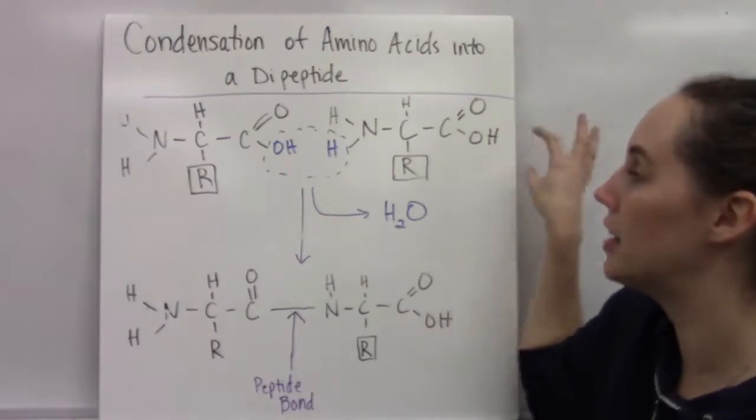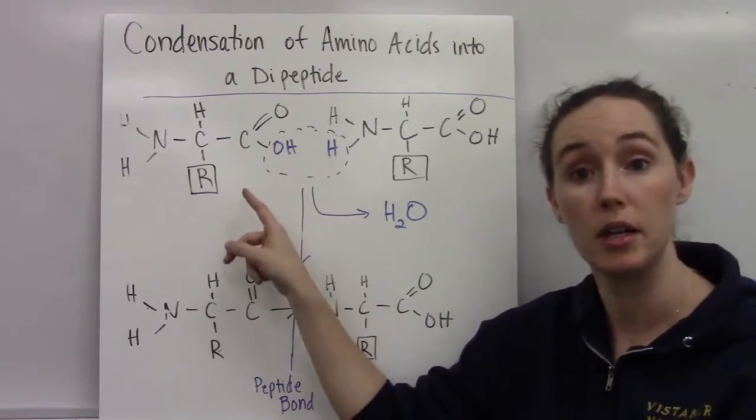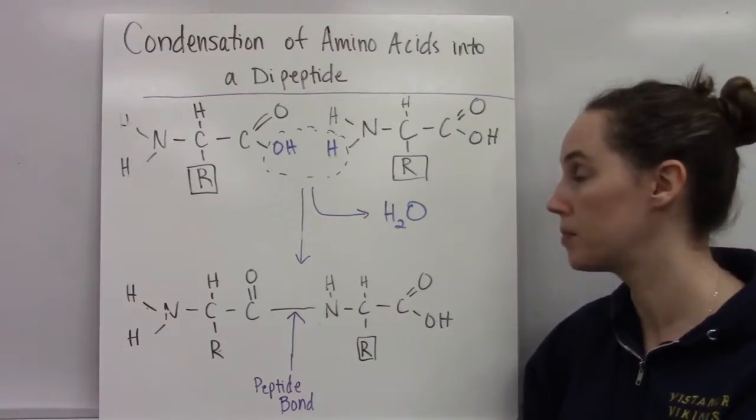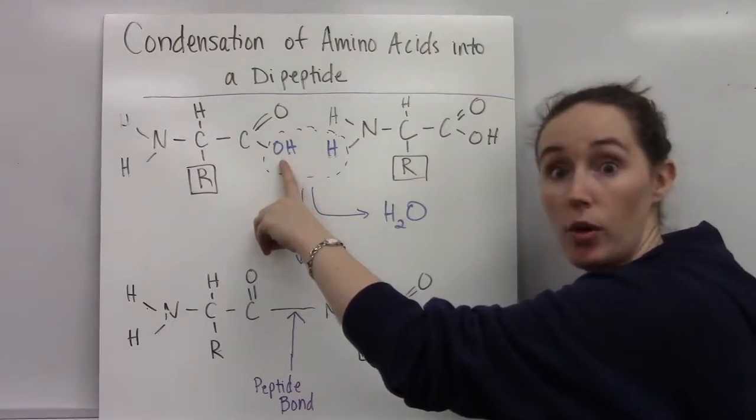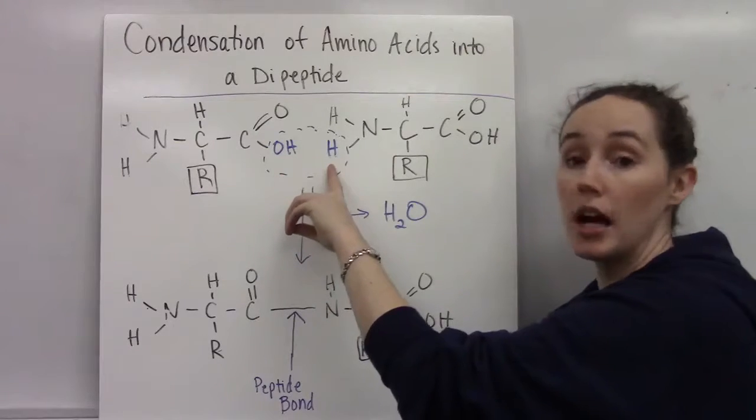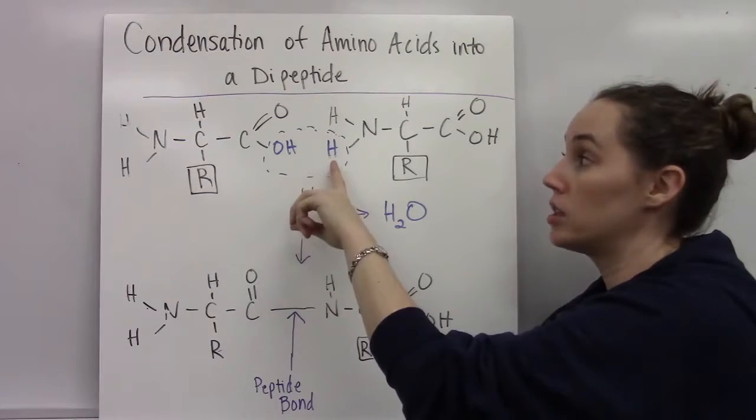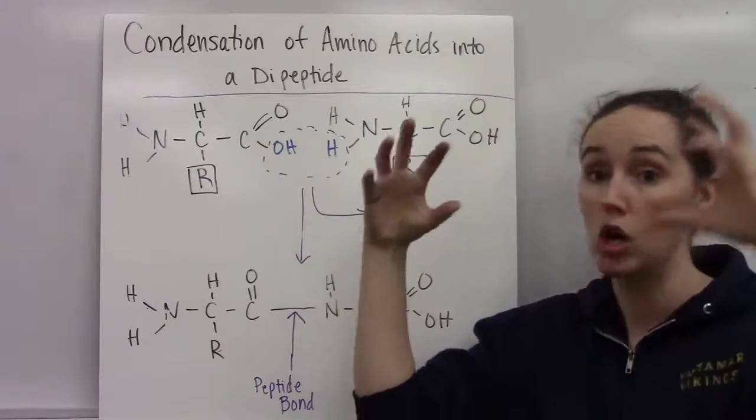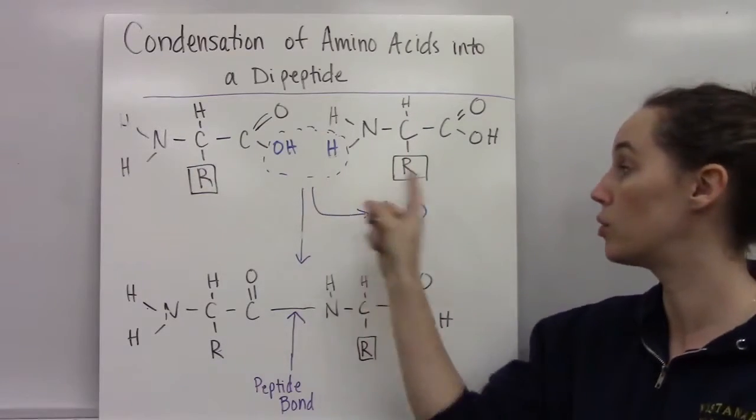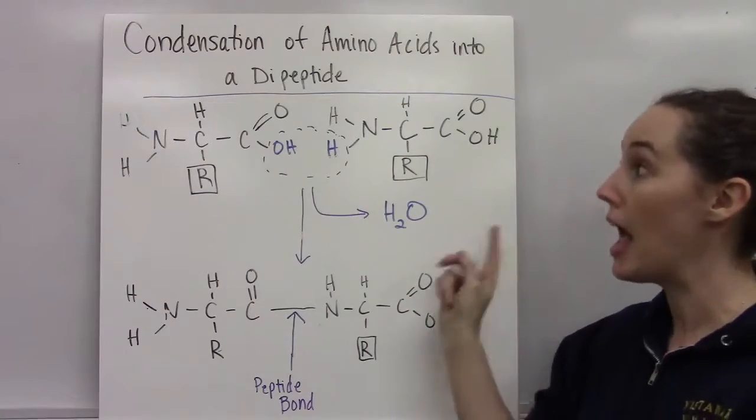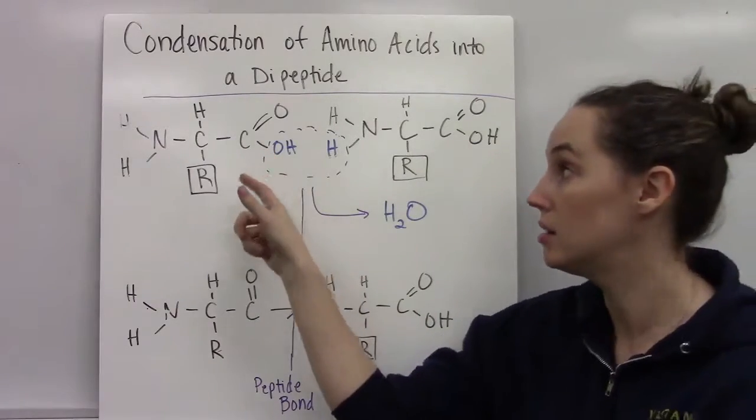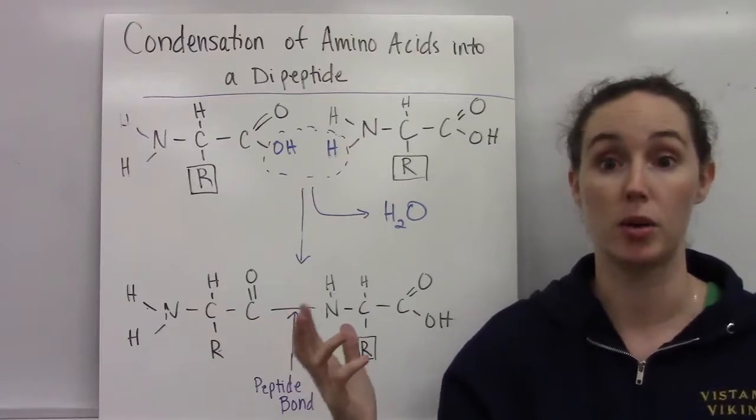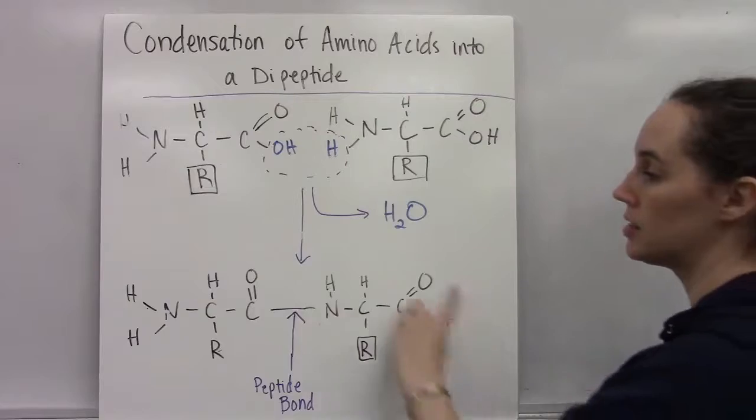Same here. All right, so we've got these lined up to where the carboxylic acid group of the first amino acid is lined up with the amine group of the second amino acid. Now it's this OH coming off the carboxylic acid and one of the hydrogens coming off the nitrogen and the amino group. These are the two that are going to break off of these amino acids, join together to form water, which will leave. And now carbon needs to make an extra bond.